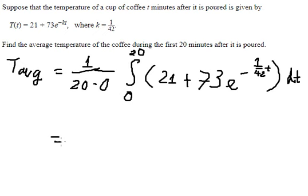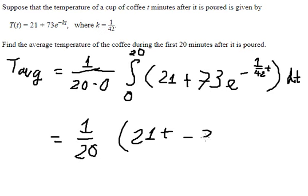Now we got about 1 over 20, and this gives us 21t minus 42 multiplied with 73. From the interval in here we got about 3066.